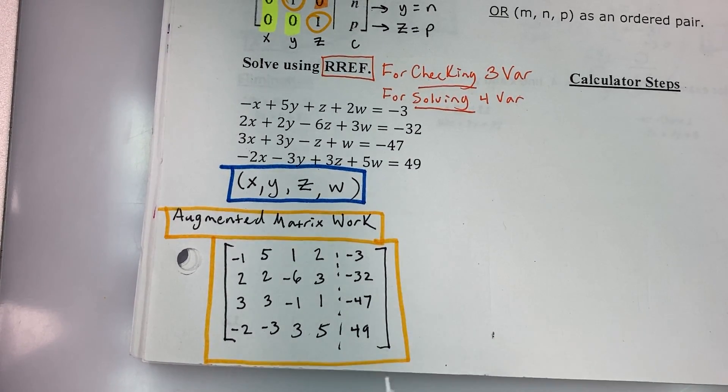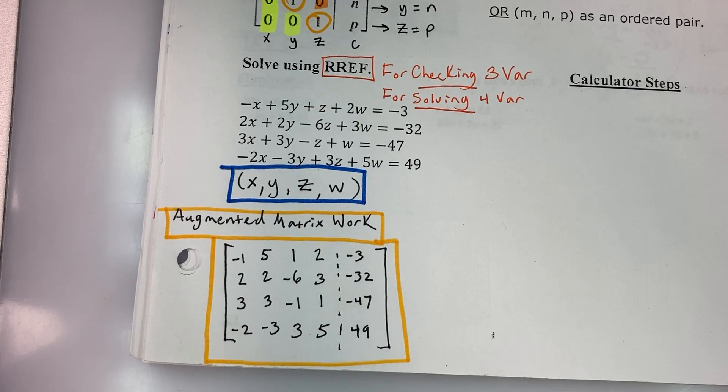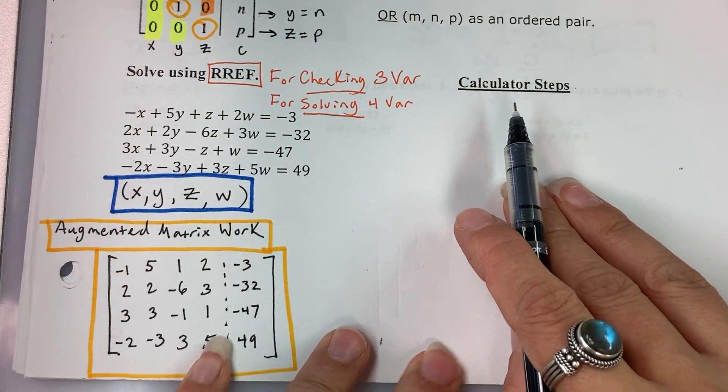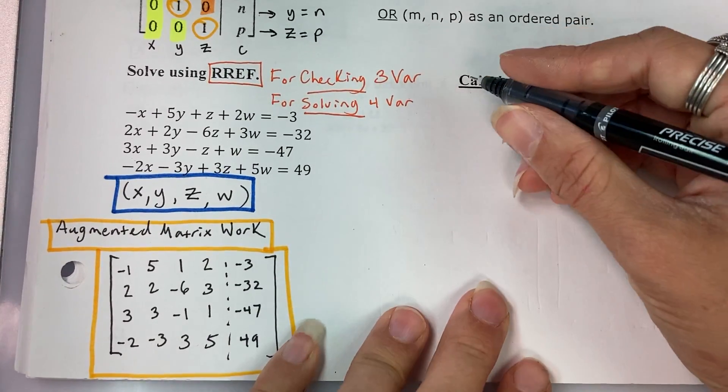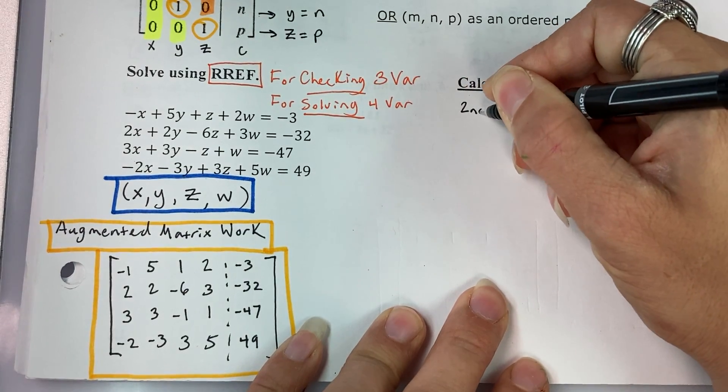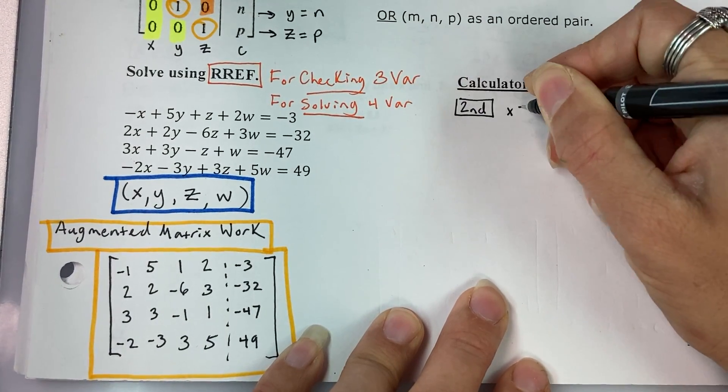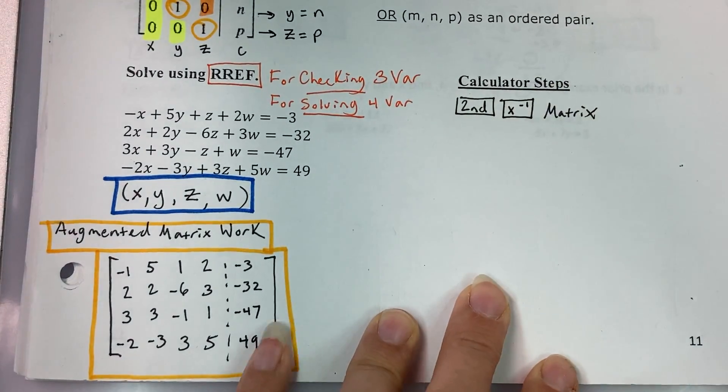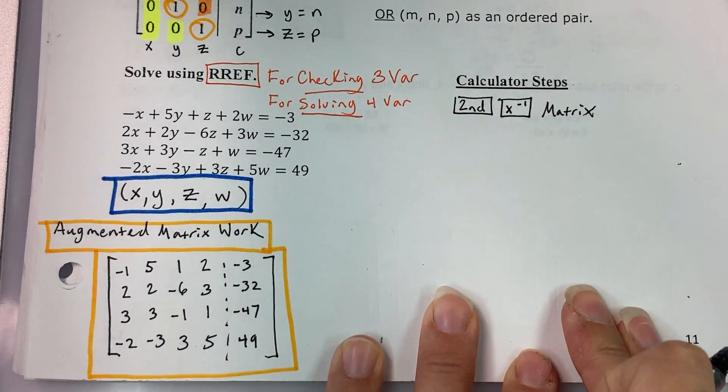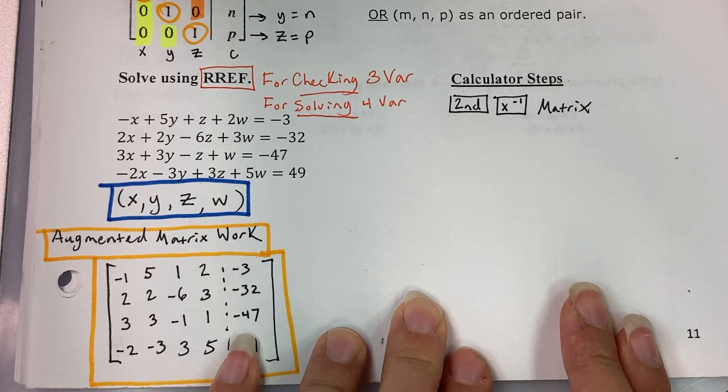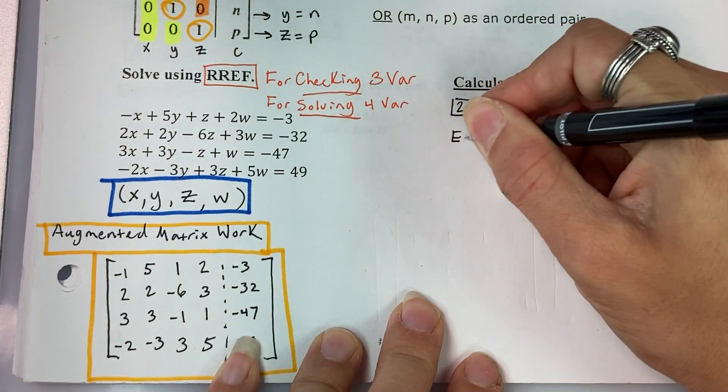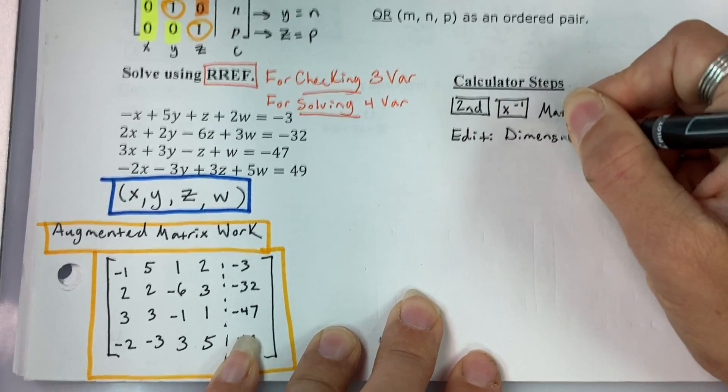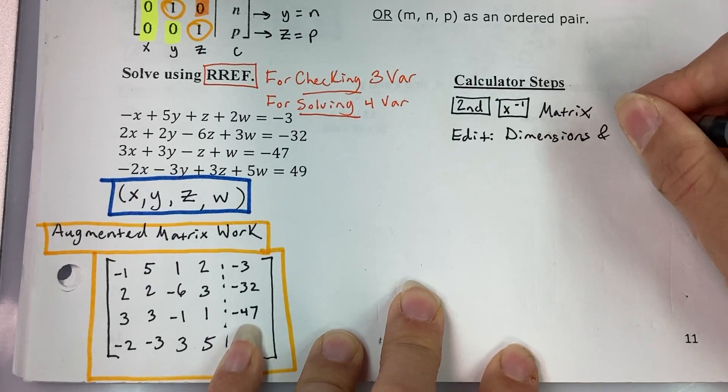Next, we have to figure out how to put this matrix into our calculator. So folks, these are the calculator steps for reduced row echelon form, or RREF. First, second, x to the negative one, and that is going to take you to the matrix area of your calculator. You are going to go to edit, and then state your dimensions, and then start buttoning in your elements.